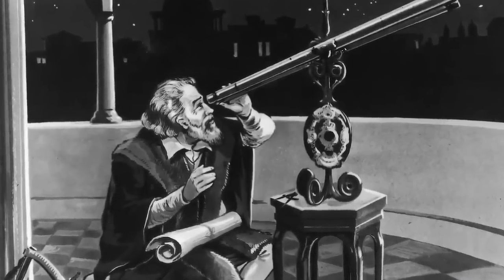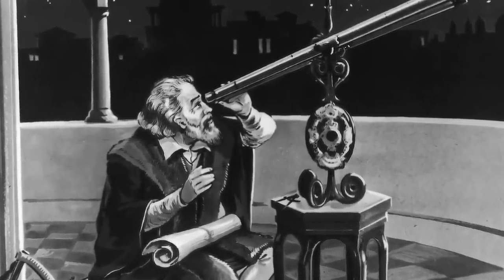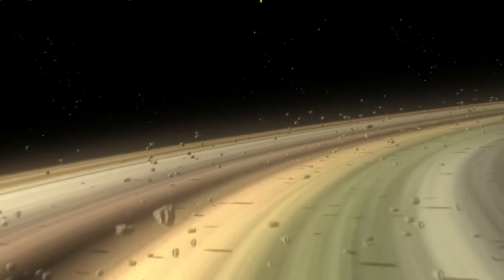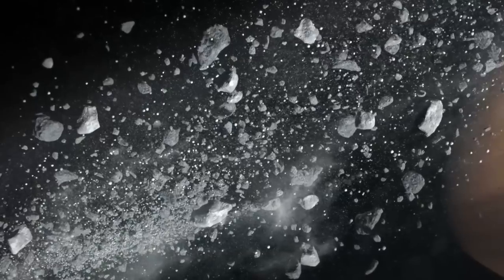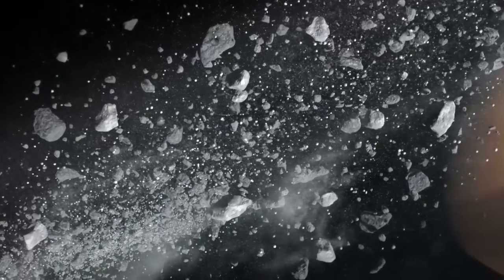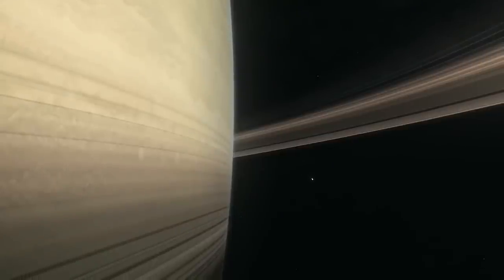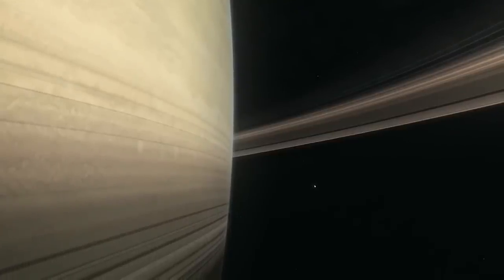In 1610, Galileo, observing Saturn for the first time, defined it as a planet with two satellites. Two years later, with an improvement of his observation tools, he will qualify this time, the rings, as two half ellipses.